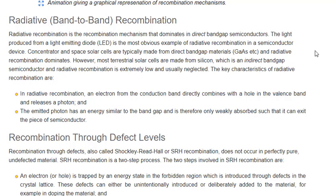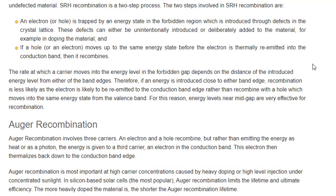The emitted photon has an energy similar to the band gap and is therefore only weakly absorbed, such that it can exit the piece of semiconductor. Recombination through defects, also called Shockley-Reed-Hall or SRH recombination, does not occur in perfectly pure, undefected material. SRH recombination is a two-step process. The first step is that an electron or hole is trapped by an energy state in the forbidden region, which is introduced through defects in the crystal lattice.